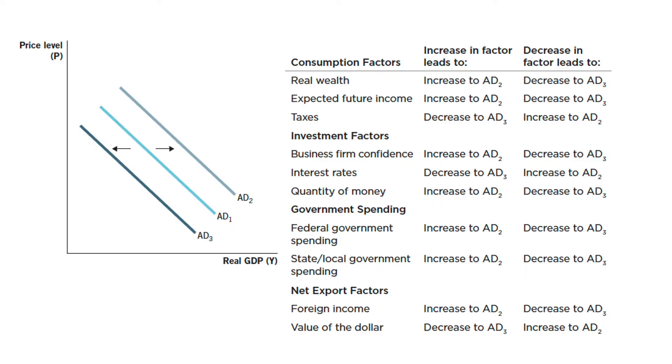This is the summary of the shift factors of the AD curve. Now you know what causes a movement along the AD curve and what causes a shift in the AD curve. My recommendation is to work through the problems provided, practice graphing the AD curve, and explain the reasoning behind the shifts and movements in the AD curve. If you have questions, reach out. Next, we're going to look at the aggregate supply curve.